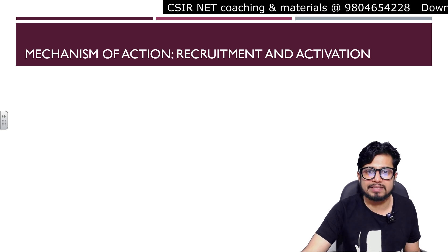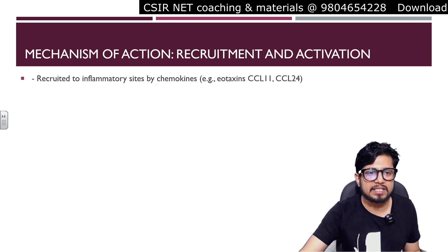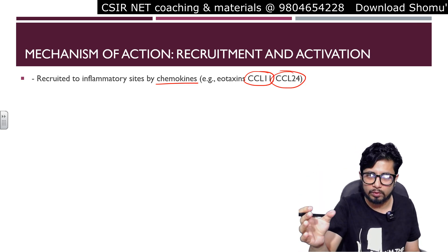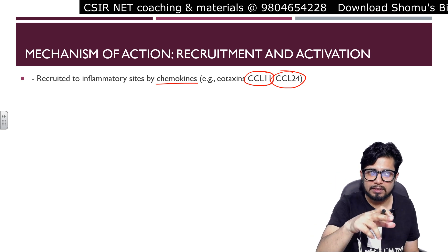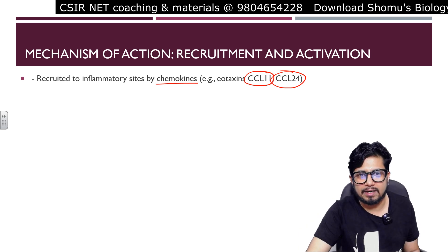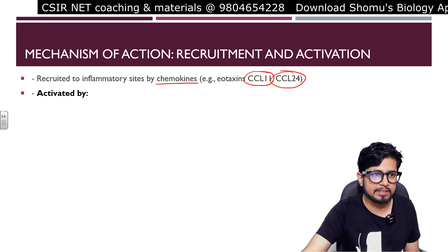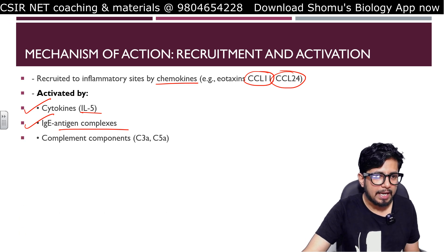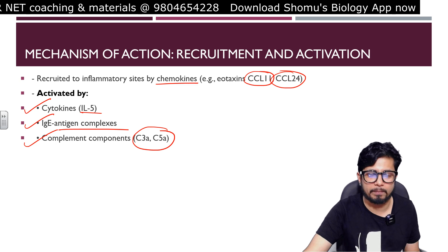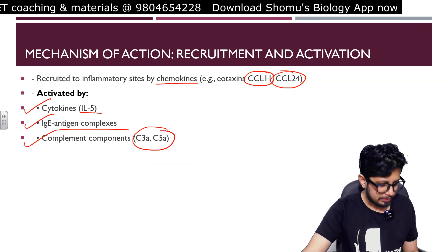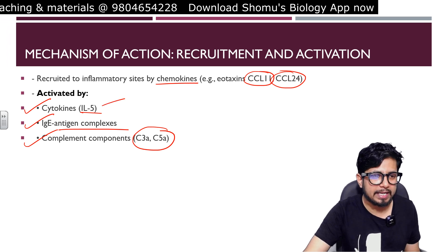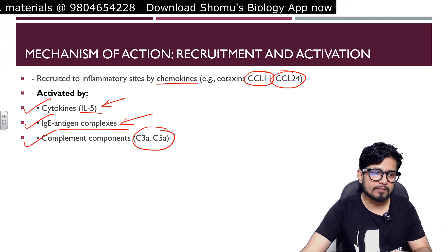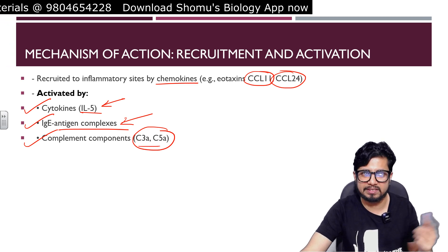Looking at the mechanism of action — recruitment and activation: eosinophils are recruited to inflammatory sites by chemokines. Release of CCL-11 and CCL-24 causes migration of eosinophils toward specific tissues. They are activated by cytokines like interleukin-5, IgE-antigen complexes, and complement components like C3a and C5a, which are part of the anaphylatoxins. So eosinophils can be activated via IL-5, IgE-mediated allergic reaction, or complement proteins C3a and C5a.